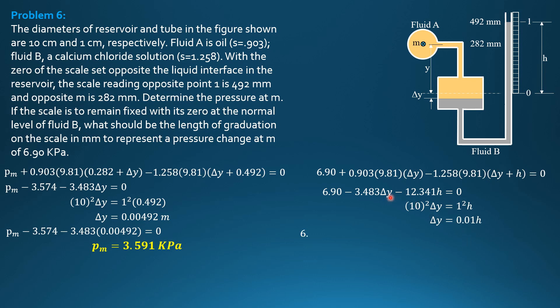Substitute here, then we can now solve for H. So H is 6.9 divided by the quantity 3.483 times 0.01 plus 12.341. H is 0.5575 meter or H is 557.5 mm. So that's it.